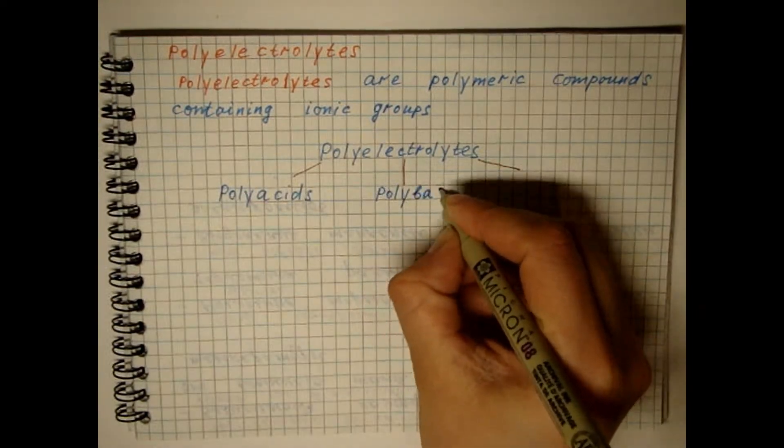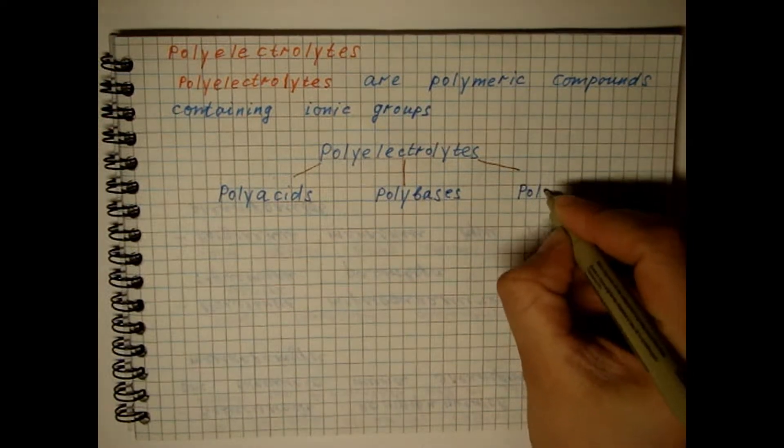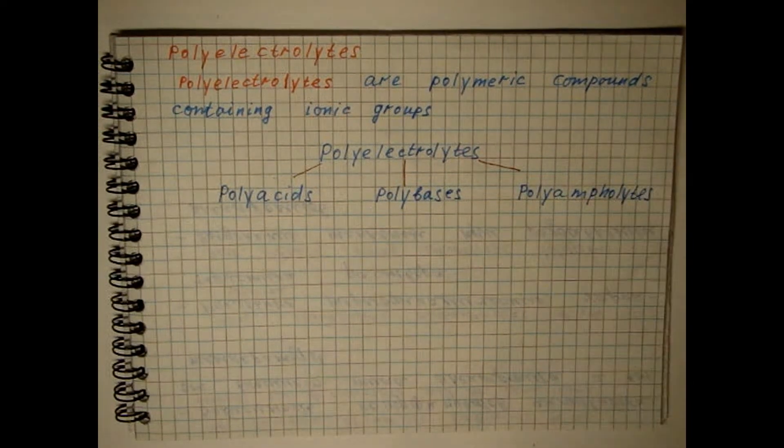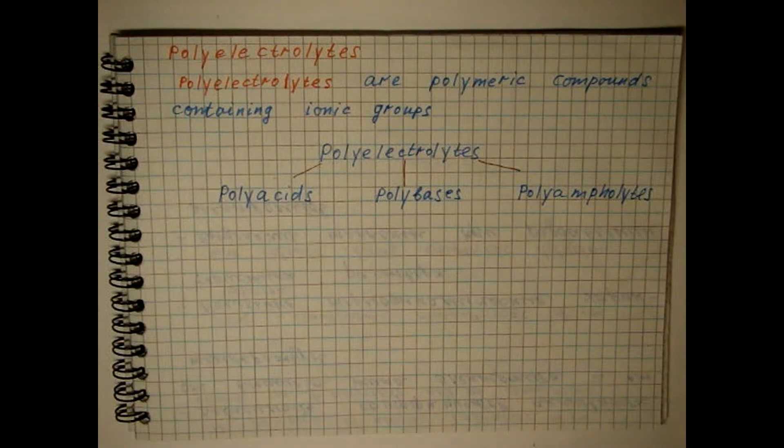Polyacids and polybases are divided into strong and weak, the charge of which is determined by the dissociation constants of ionogenic groups and the pH of the solution.